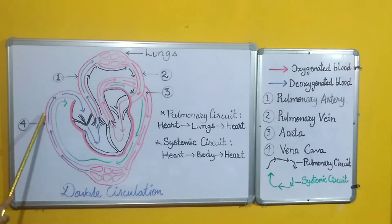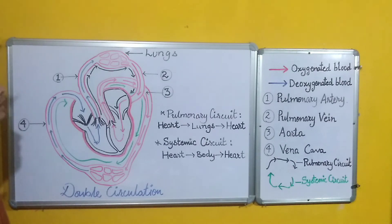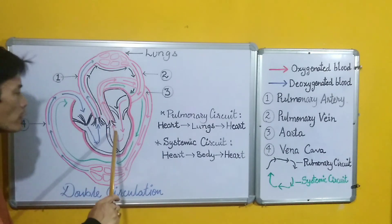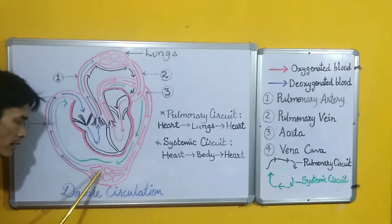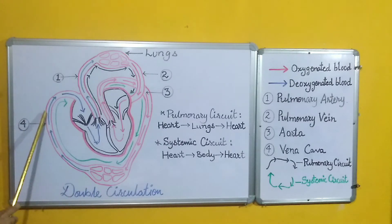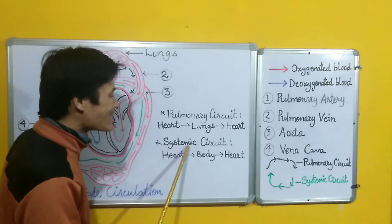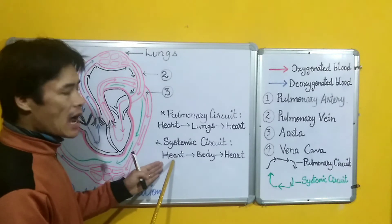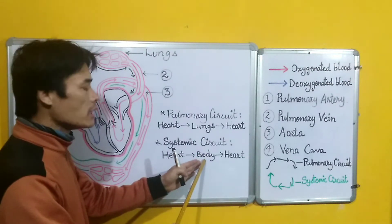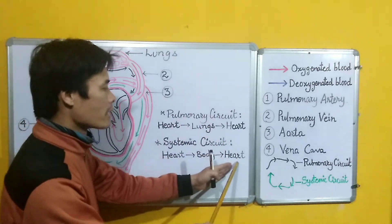Here we see once again the blood entering the right side of the heart. This flow of blood from the heart to the different parts of the body and then from the different parts of the body back into the heart is systemic circulation, brought about by the systemic circuit.